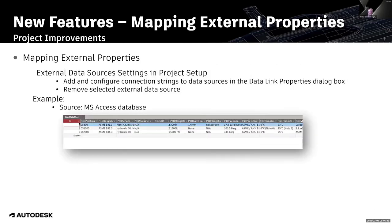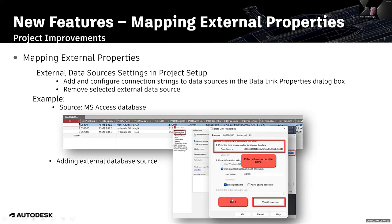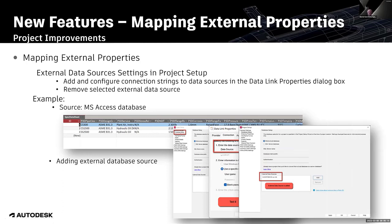An example is best. Here is a Microsoft Access database with a table called Spec Data Sheet. Note the very first value CS300 in the column P3D Pipe Class — just remember CS300. Now in Project Setup, in the Database Setup node, click the button Add. When the Data Link Properties dialog opens, select Microsoft Access 16 database and click Next. Enter the path and file name for your Microsoft Access file, check the connection by clicking Test Connection, and finally click OK. The external data source is now added in Project Setup.